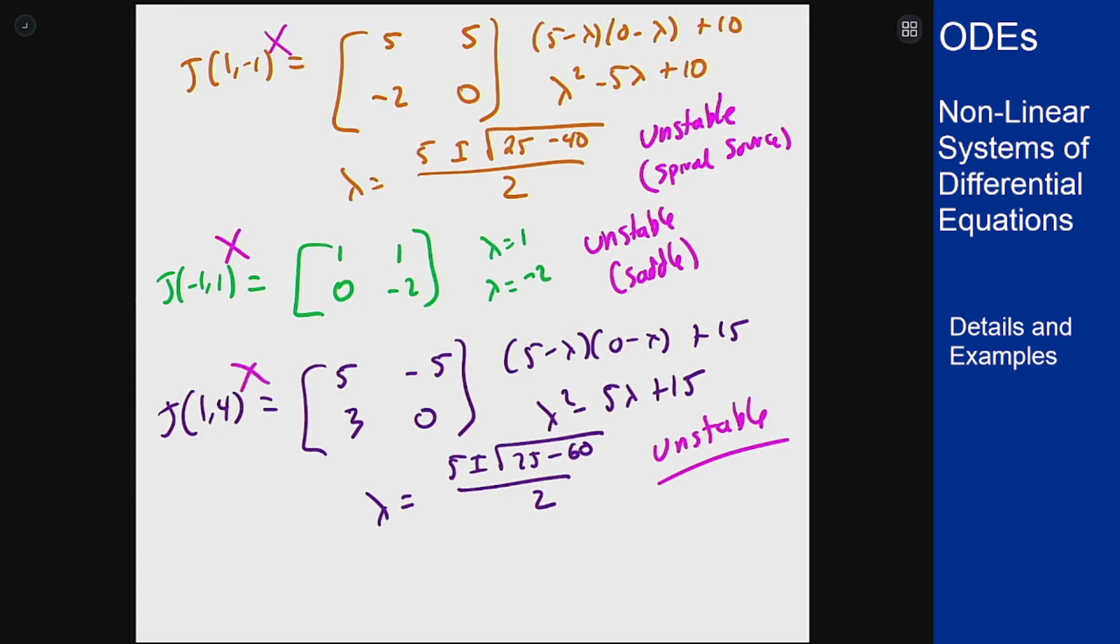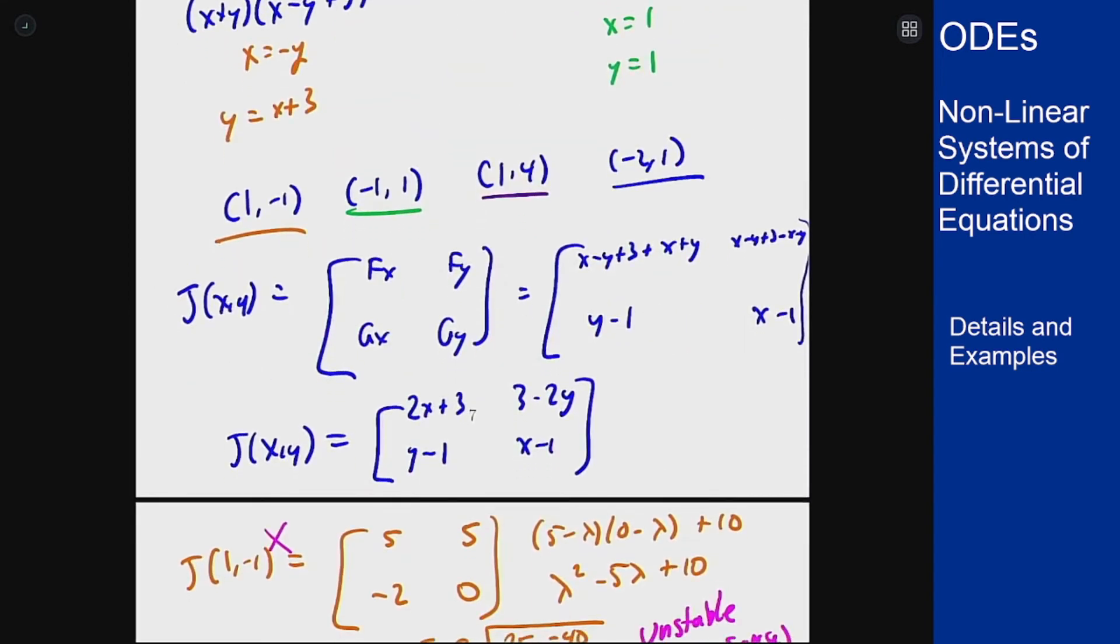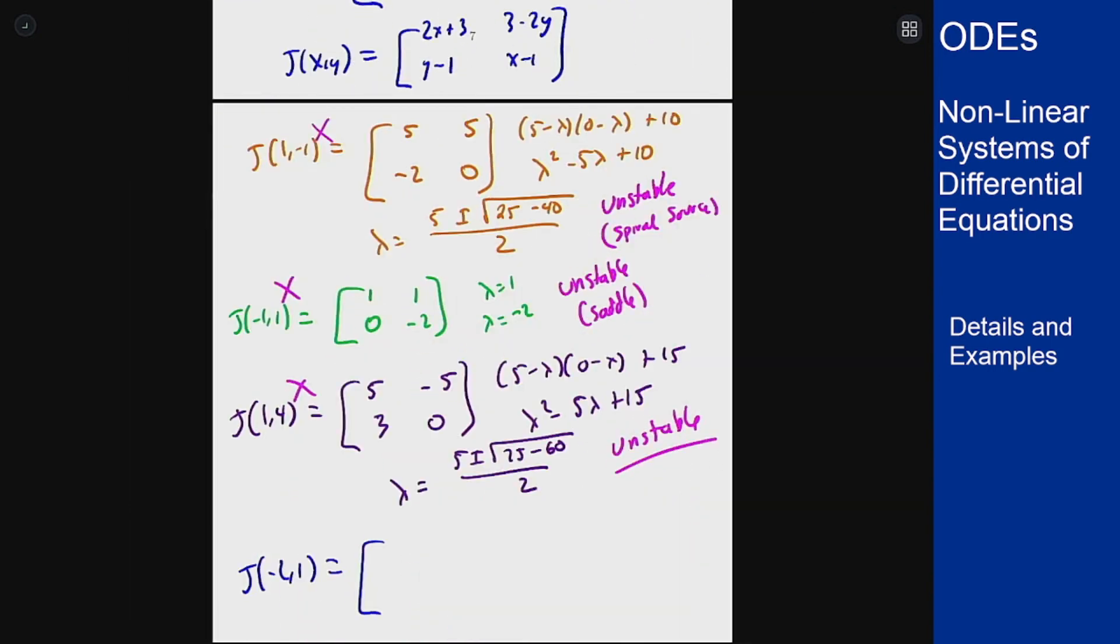So it better be the last one. Let's see what we get for that one, which is minus 2 comma 1. Which will be minus 4 plus 3 is negative 1, 3 minus 2 is 1, y minus 1 is 0, x minus 1 will be negative 3. And now we're in good shape. The eigenvalues here are minus 1 and minus 3. This is a nodal sink, so it is asymptotically stable. So this point, minus 2 comma 1, is the solution that will have a basin of attraction.